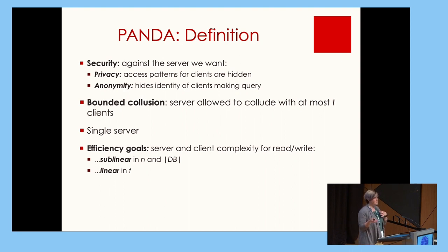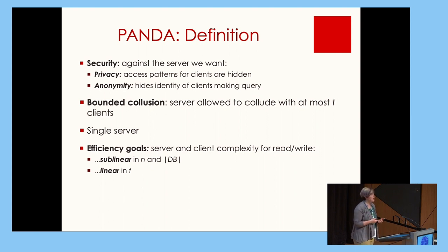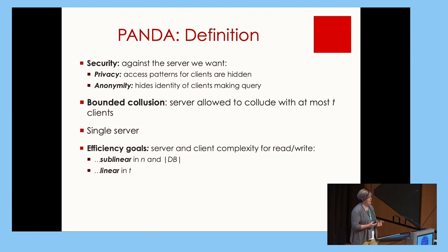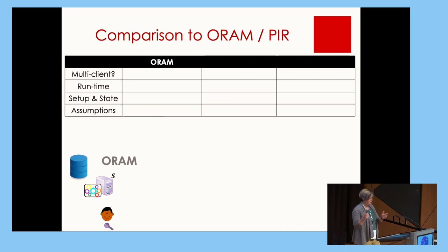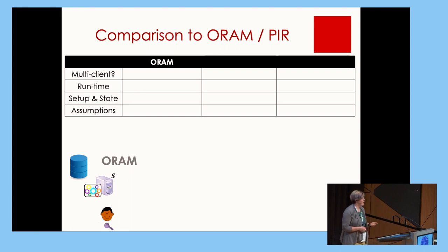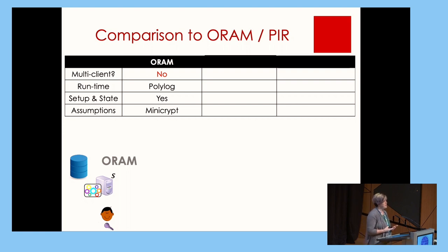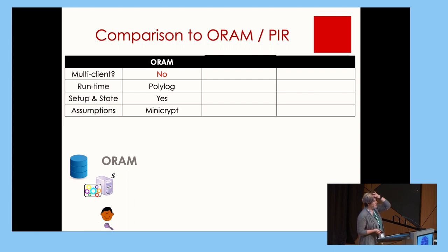This may sound similar to some primitives from earlier in this session — namely oblivious RAM and private information retrieval — so I want to compare and contrast the PANDA setting with those. Spoilers: they don't solve our problem. ORAM involves a single server and single client making queries into a database while hiding access patterns. ORAM is not inherently multi-client — there are schemes that attempt to support it, but most common schemes do not. Runtime is poly-log in the database size, and ORAM can be built from one-way functions.